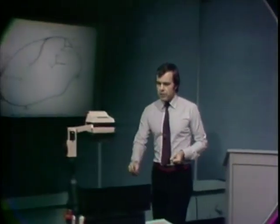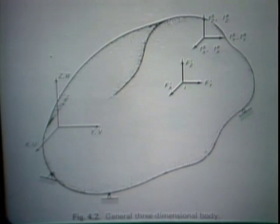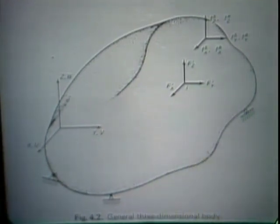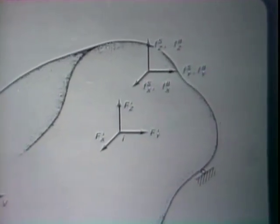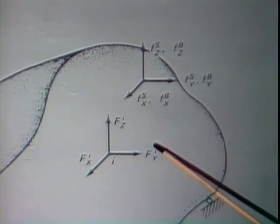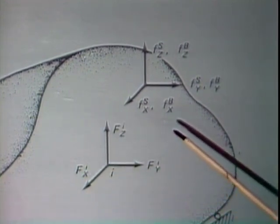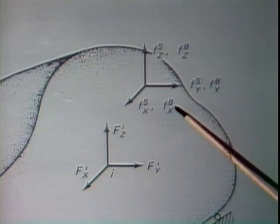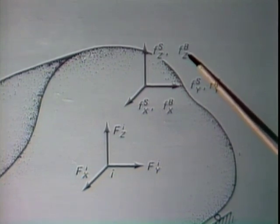On this first view graph, I have prepared schematically a sketch of a three-dimensional body — this could represent typically a bridge, a shaft, a building, whatever structure we want to analyze. This three-dimensional body is subjected to the following forces: concentrated forces with components Fxi, Fyi, Fzi at point i. The body is also subjected to body force components Fbx, Fby, Fbz, which are forces per unit volume.